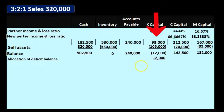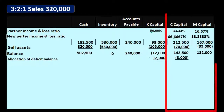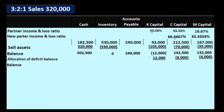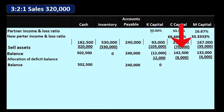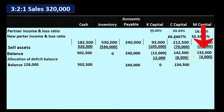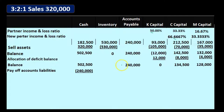Applying that allocation: K's capital goes to zero. C's capital goes from $142,500 down by $8,000 to $134,500 — his portion of the reduction due to K not paying back the partnership. M's capital goes from $132,000 down by $4,000 to $128,000. Then we pay off the liabilities: $240,000 is paid and removed from the books.